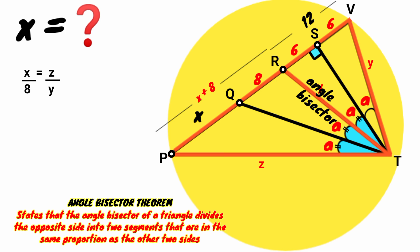It says the angle bisector of a triangle divides it into two segments that are in the same proportion as the other two sides. This segment is in the same proportion with this segment RV as this side is to this side. So x plus 8 all over 12 equals z over y.